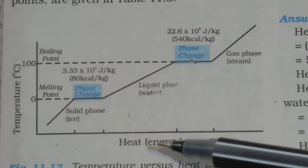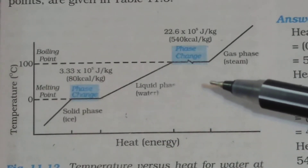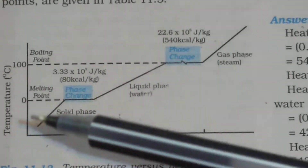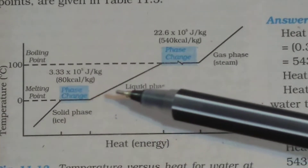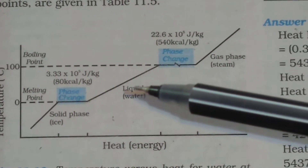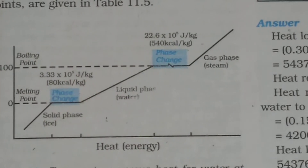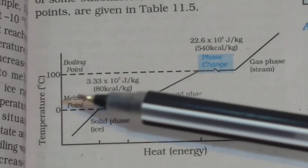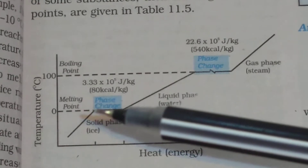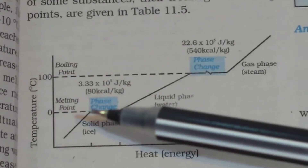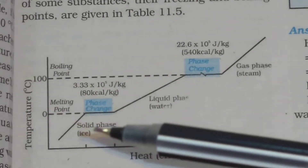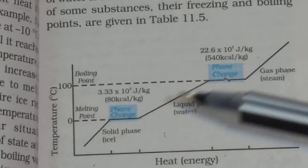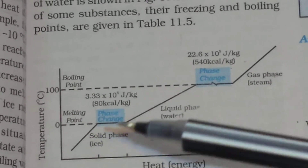It is very important to remember the latent heat of fusion and latent heat of vaporization for water. If you plot a graph taking heat along the x-axis and temperature along the y-axis, the graph will look like this. The melting point of ice is 0 degrees centigrade, where the phase change occurs.